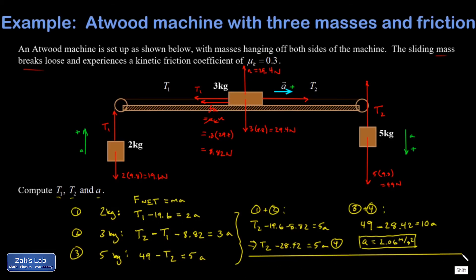So space is tight so we'll use a little divider. I get T1 is equal to 19.6 plus twice a but a is 2.06. So T1 is going to be 2 times 2.06 and I get 23.7 for that, 23.7 newtons.